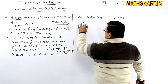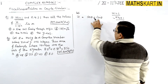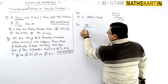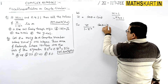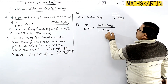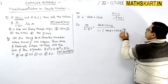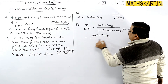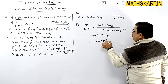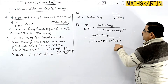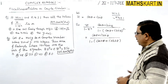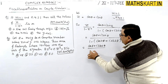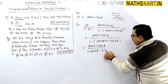Let z equal cosθ plus i·sinθ. We have to find the value of cosθ plus i·sinθ divided by 1 minus z squared. So z squared is cosθ plus i·sinθ whole squared, which equals cos2θ plus i·sin2θ. Therefore we write: cosθ plus i·sinθ divided by 1 minus cos2θ minus i·sin2θ.